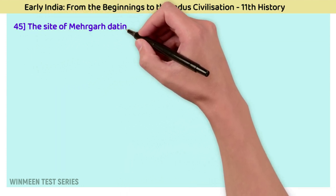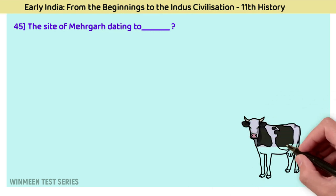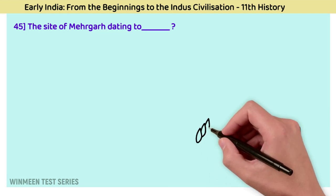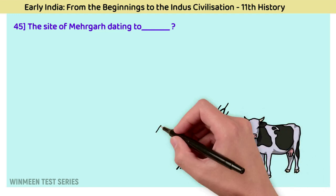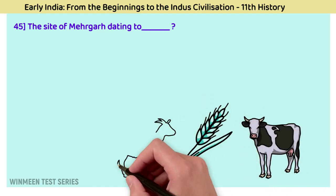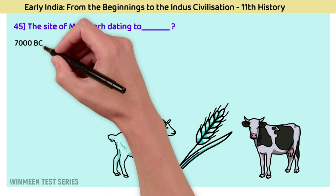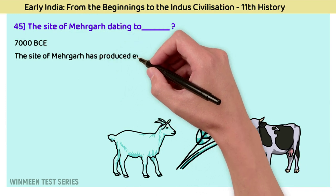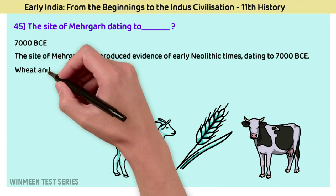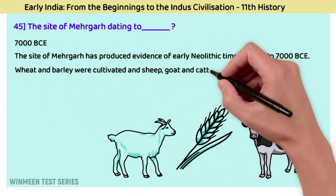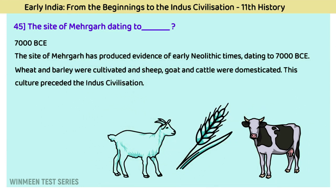Question 45: The site of Mehrgarh dates to? The answer is 7000 BCE. The site of Mehrgarh has produced evidence of early Neolithic times dated to 7000 BCE. Wheat and barley were cultivated, and sheep, goat, and cattle were domesticated. This culture preceded the Indus civilization.